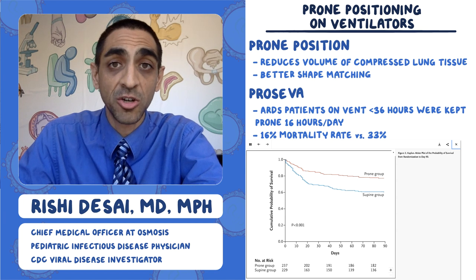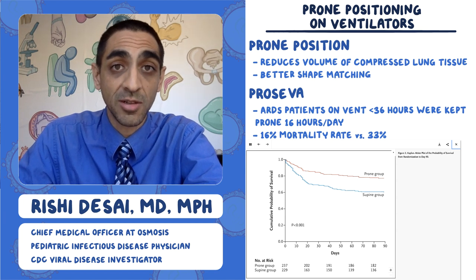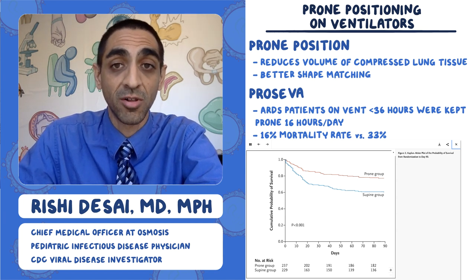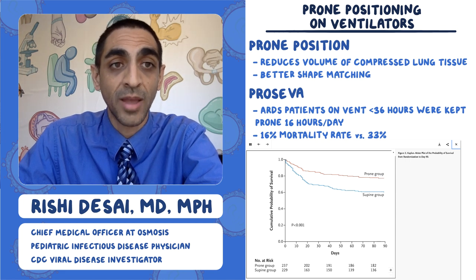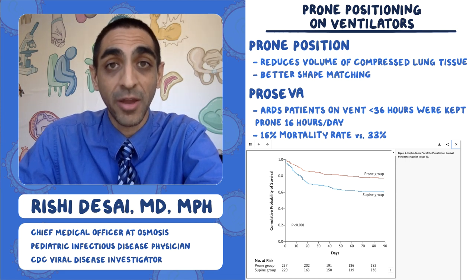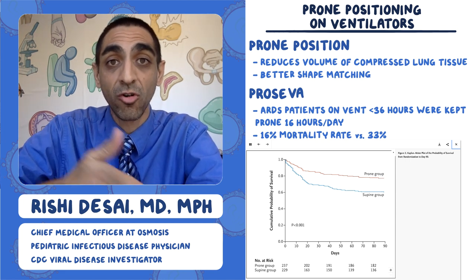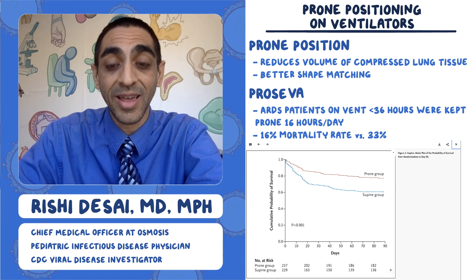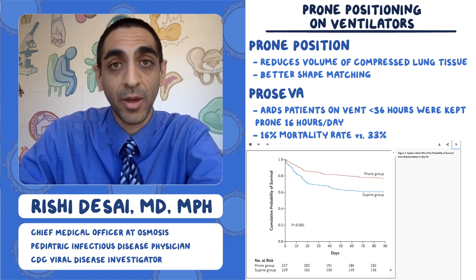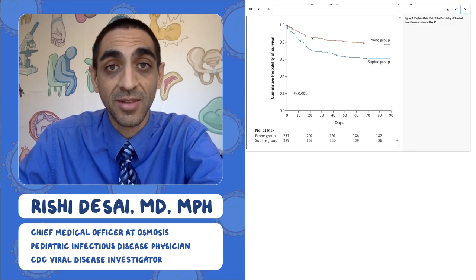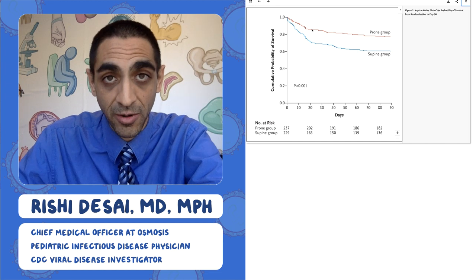To show you visually what this looked like, here's a graph of survival — the prone group in red and the supine group in blue. The prone group does way better for up to 90 days. So it's not just at the 28-day mark, but all the way out to three months, survival was better.